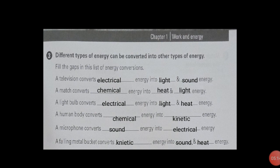A human body converts. In our body, the fruits we eat are chemical energy. Chemical energy converts into kinetic energy. The chemical energy from fruits gives us energy. We do all work and movement, so chemical energy converts into kinetic energy. A microphone converts sound energy into electrical energy. A falling metal bucket converts kinetic energy into sound and heat energy.